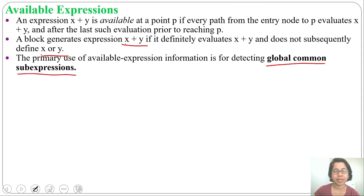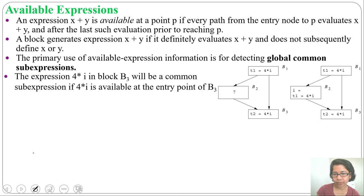Live variable analysis is used for register allocation and dead code elimination, while available expression is used for global common sub-expression elimination. The expression 4 times i in block B3 will be a common sub-expression if it is available at the entry of block B3.